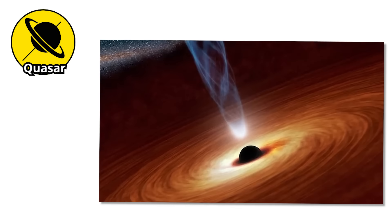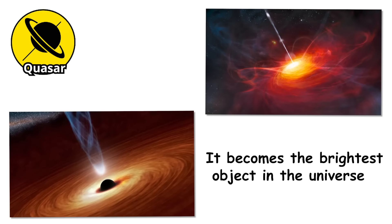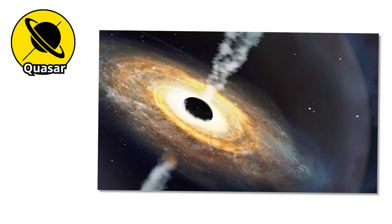Number six. Now imagine a black hole so powerful that instead of hiding in the dark, it becomes the brightest object in the universe. That is a quasar, a monster at the center of a galaxy, feeding so aggressively that it blasts out more energy than a trillion stars combined.